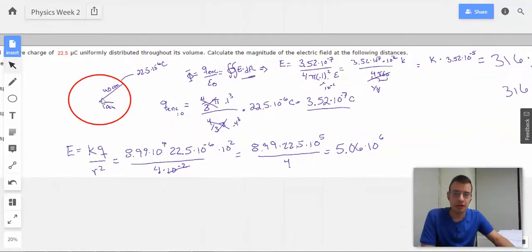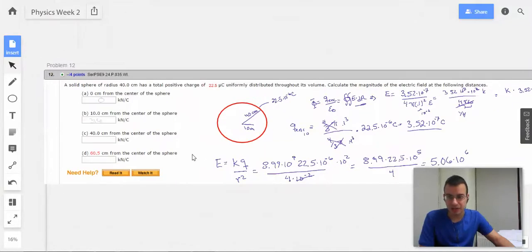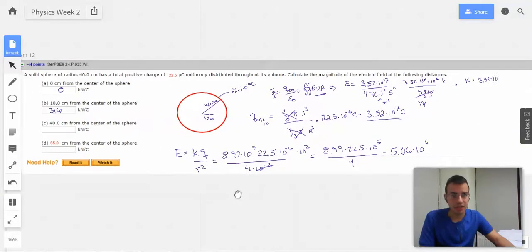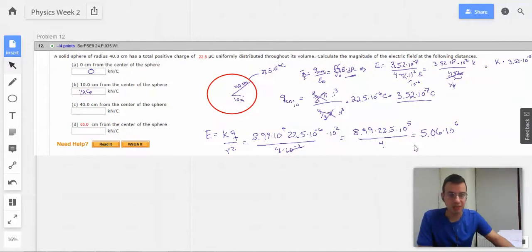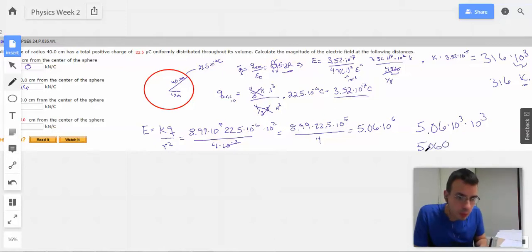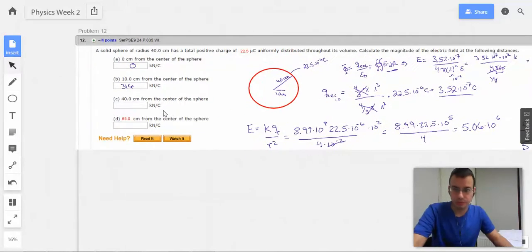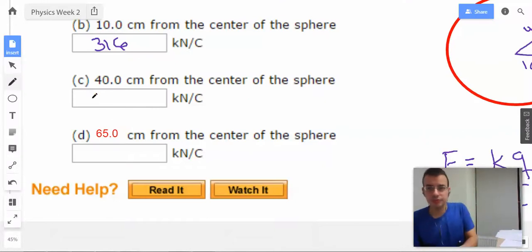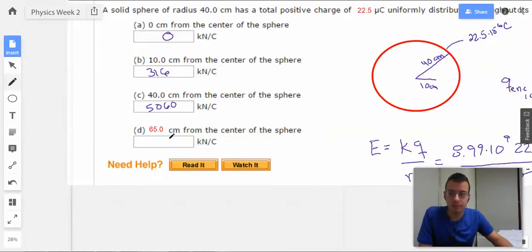Because even though we're moving further away from the center, we're picking up more charge as it moves out. So this is exactly at the edge, right? 40 centimeters. So 5.06 times 10 to the 6th, which is the same as 5.06 times 10 to the 3rd. So 5,060 kilonewtons per coulomb. So maybe 20 times bigger? Yeah. It's about 20 times bigger. I believe that.